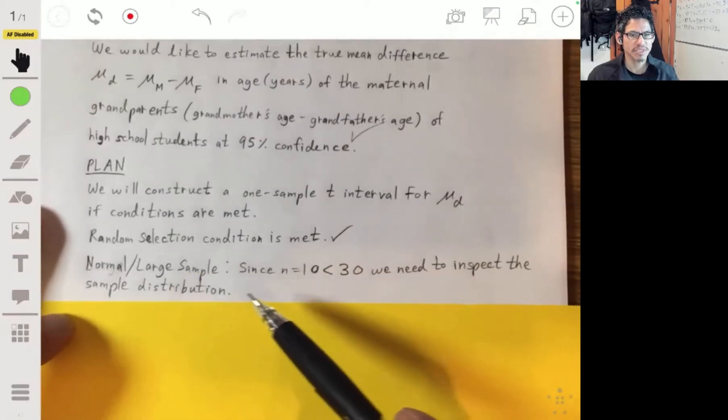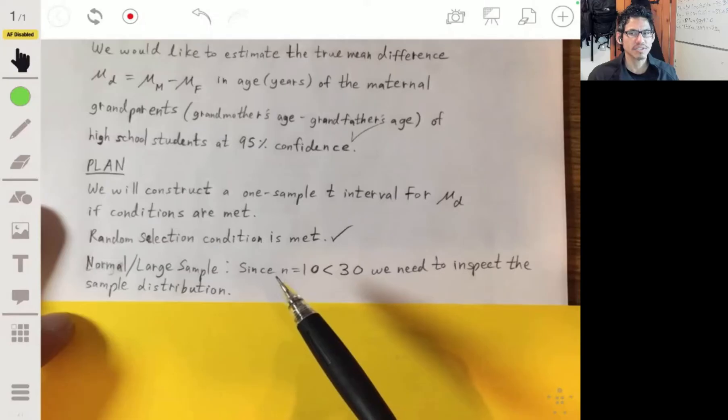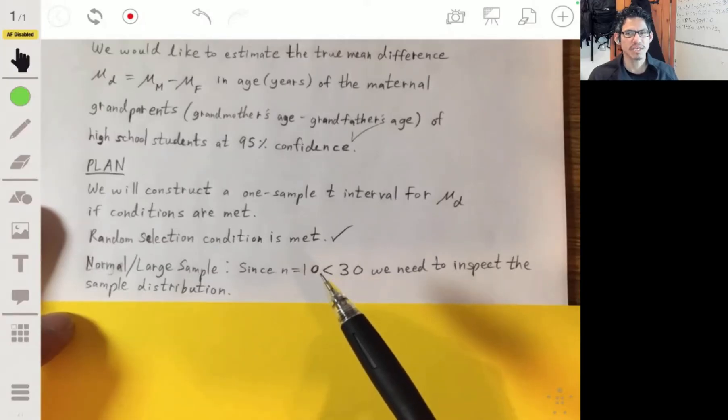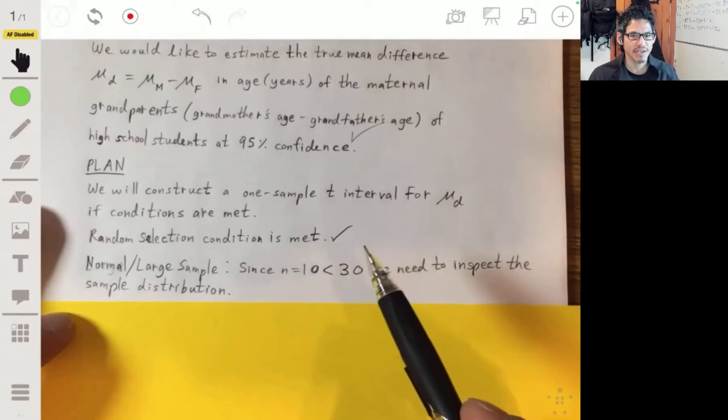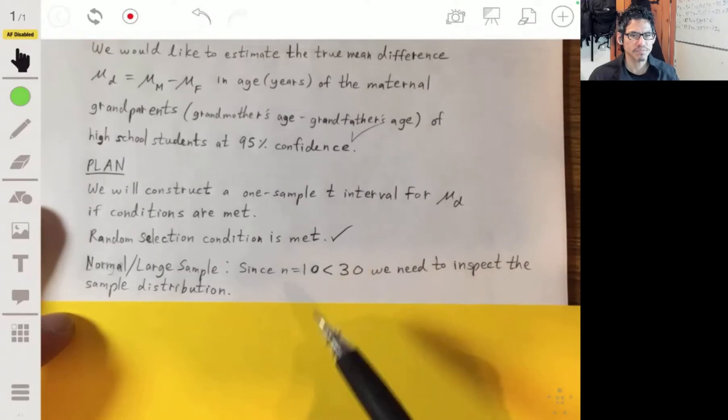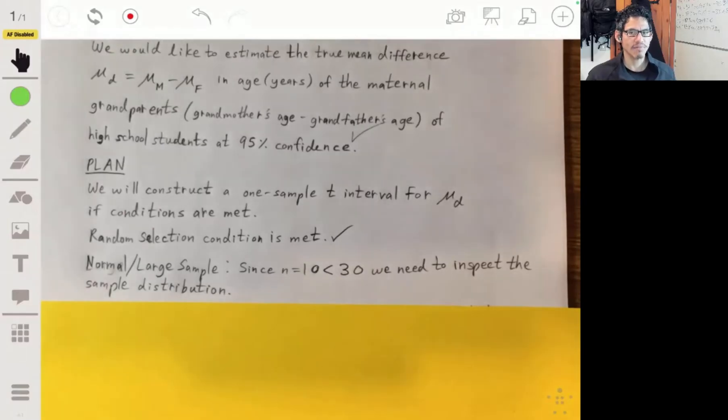And then the normal large sample condition is if you have a large enough sample, usually it's going to be 30. I think some textbooks make it 25, but in this case we only have 10. So we don't have a big enough samples to just move on. So what we want to do is inspect the sample data.